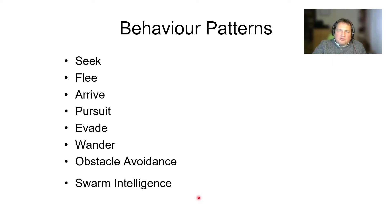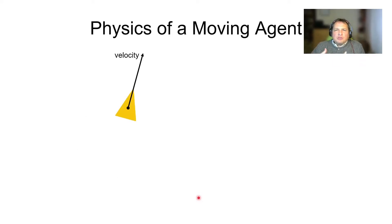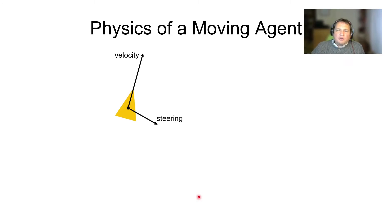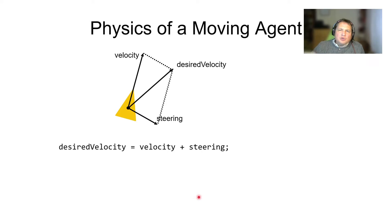This diagram shows a moving autonomous agent. The direction and speed, or velocity, of this movement is shown as a velocity vector. The agent acts upon its environment using a steering force, which is introduced in order to change its current velocity to the new desired velocity. This desired velocity can be read from the diagram as a simple vector addition: velocity plus steering equals desired velocity.